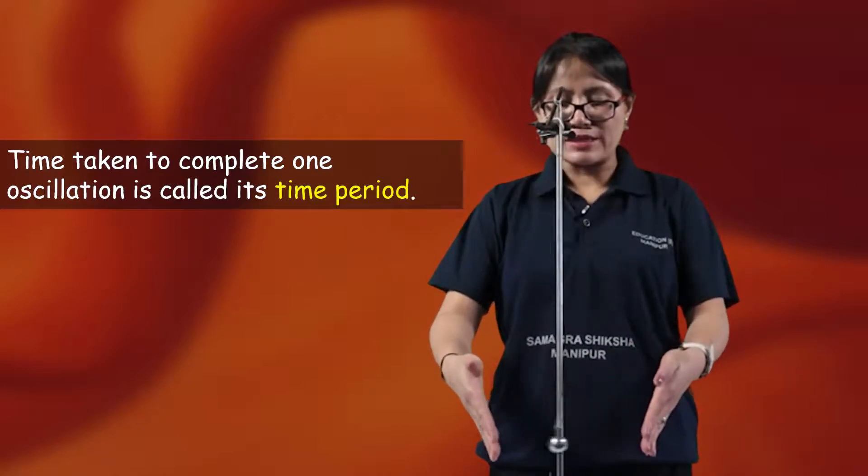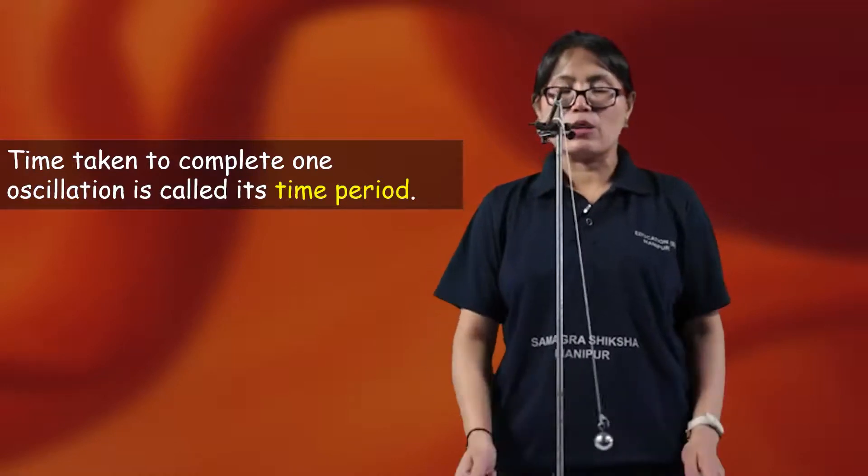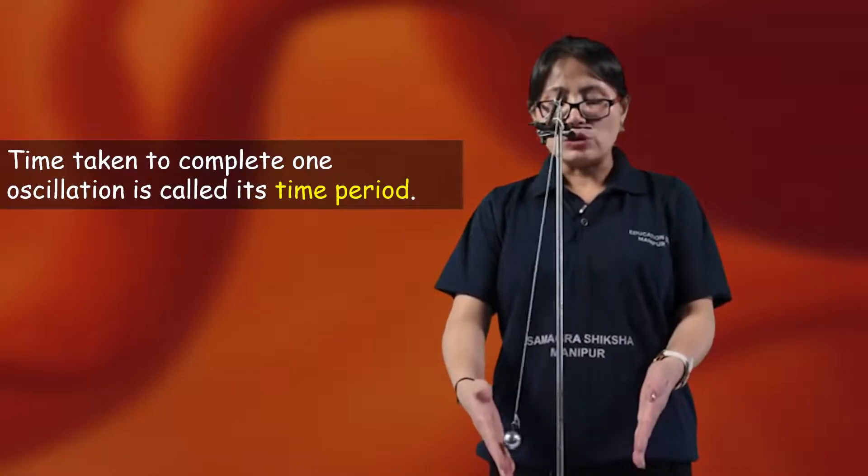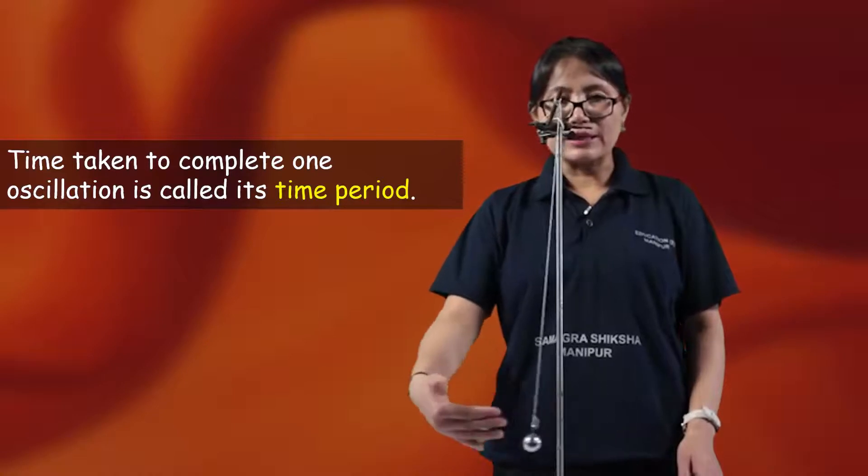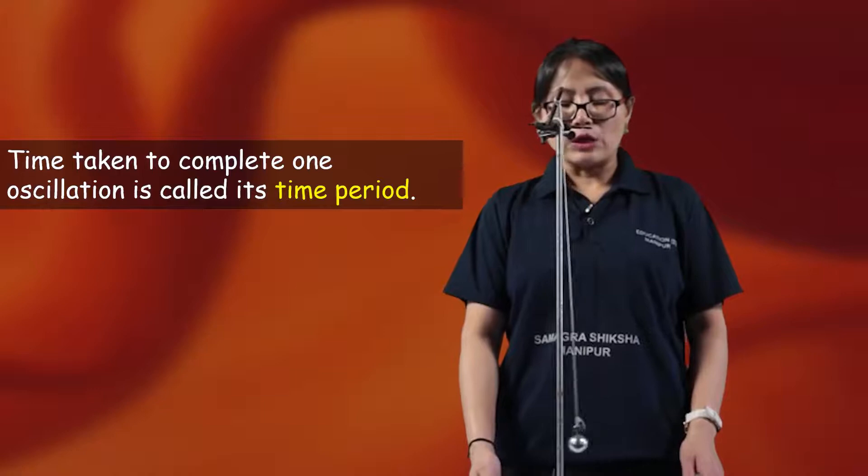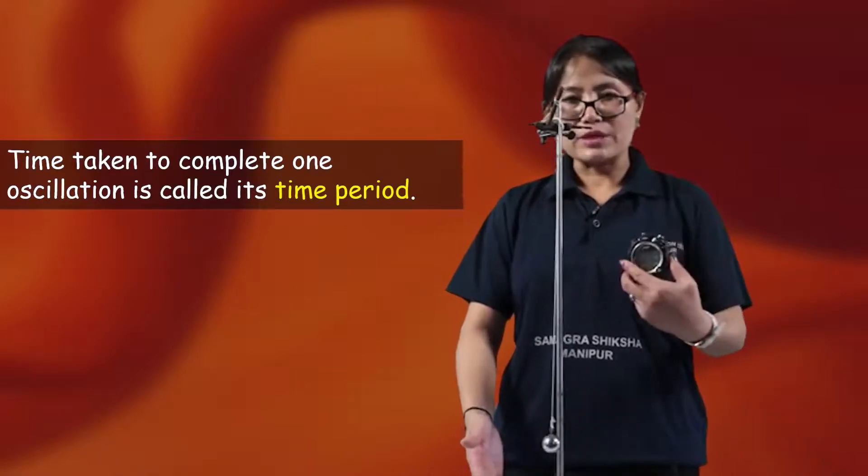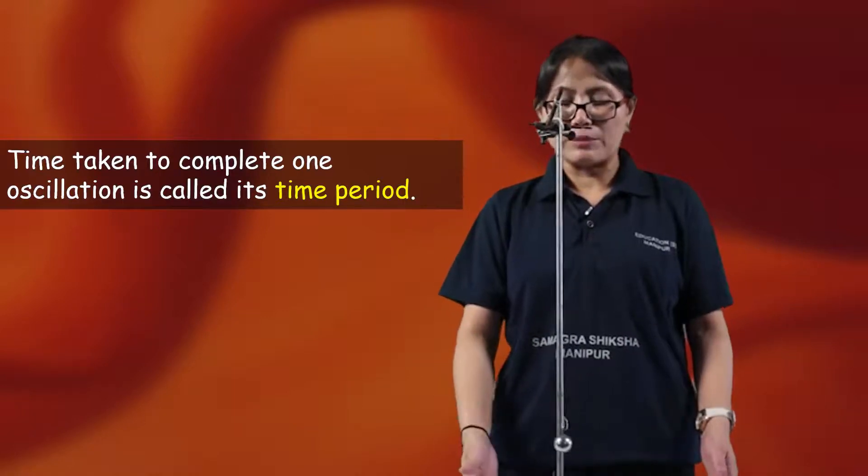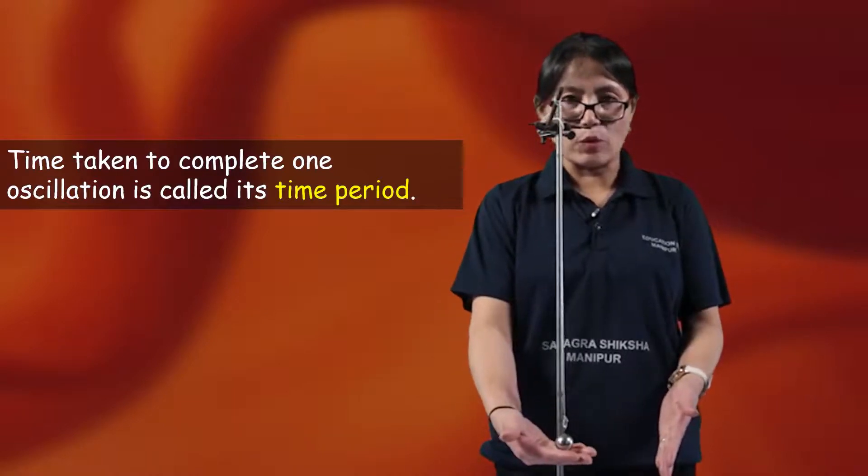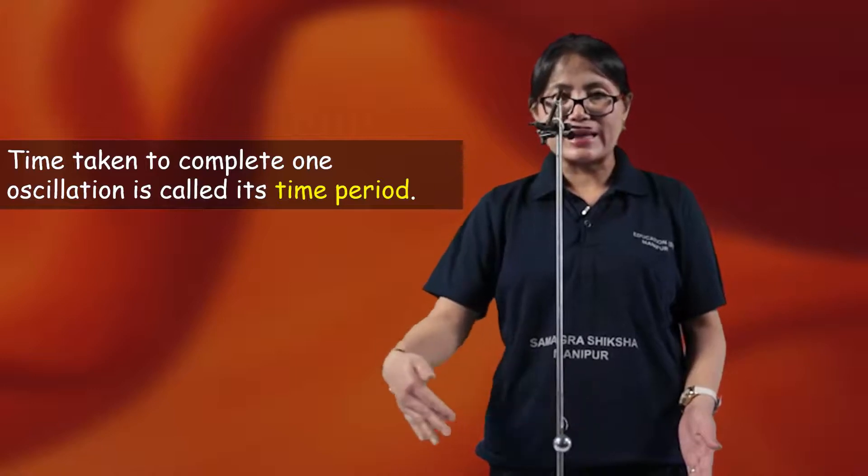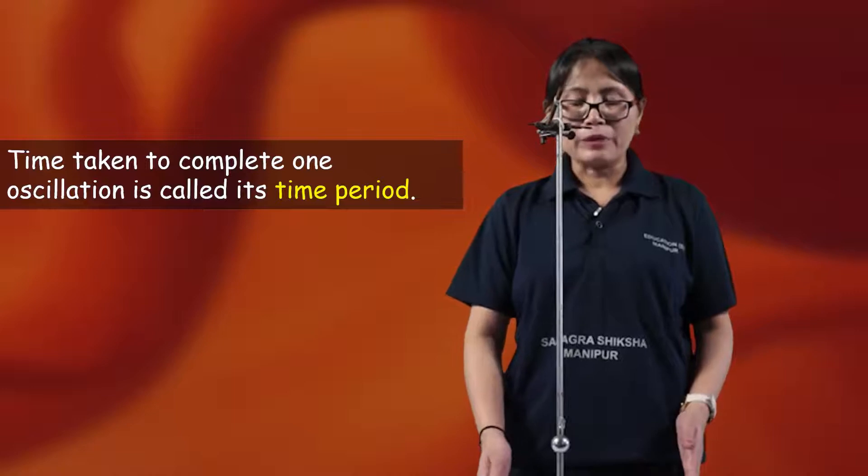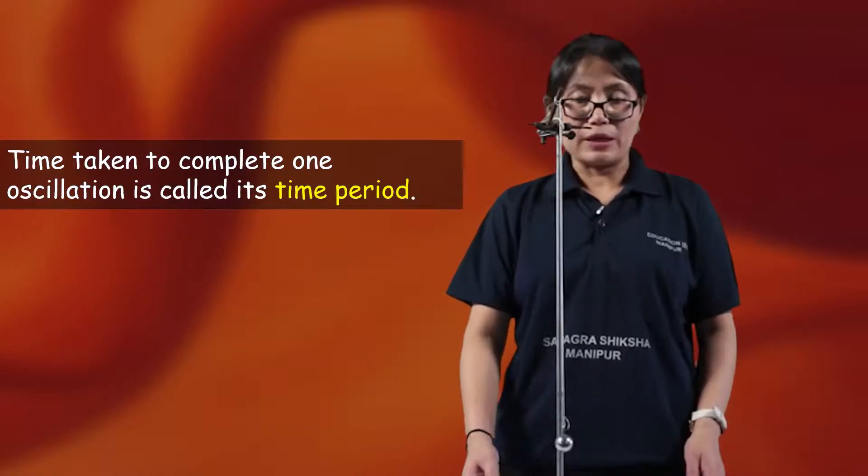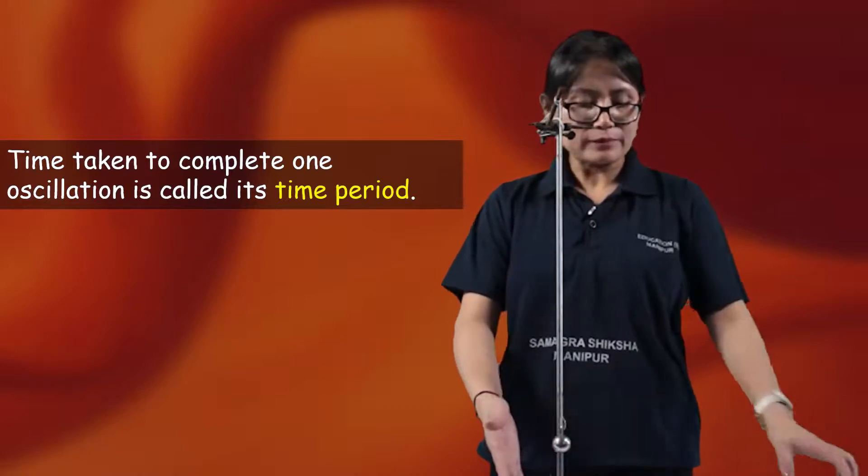The time period means the time taken by the pendulum to complete one oscillation. To measure this accurately, we take 20 oscillations using a stopwatch and then divide the total time by 20 to get the time period for one oscillation.